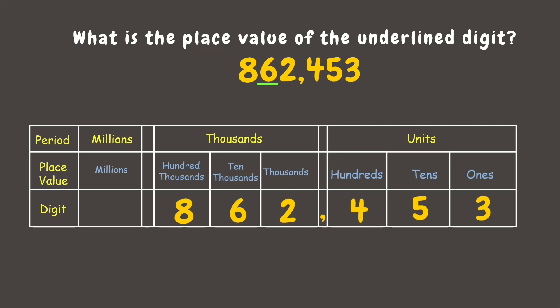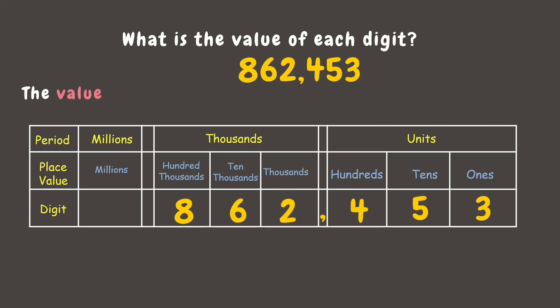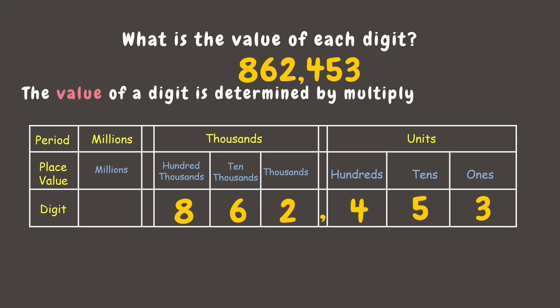And six — it is in the ten-thousands place. Now let's find the value of each digit. Did you know that value is what a digit is worth depending on its place? It is determined by multiplying that digit by its place value.